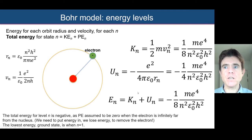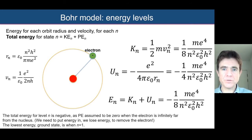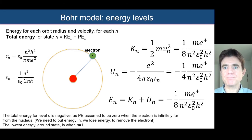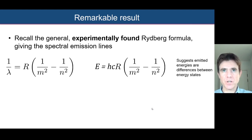And it's worth noting that the total energy is described as negative, and what that means is that we would need to put energy in to liberate an electron from one of its orbits around the nucleus of the hydrogen atom.